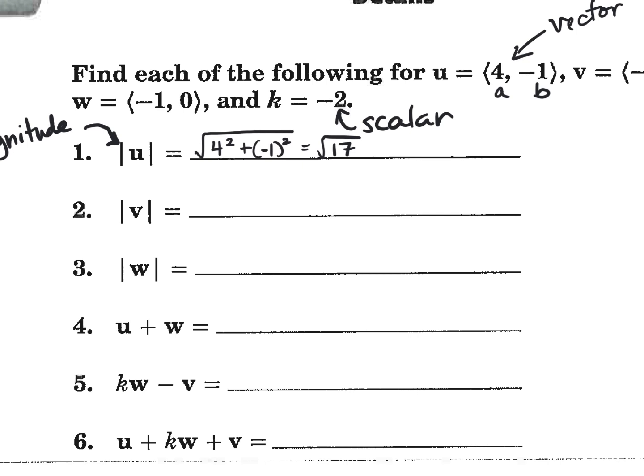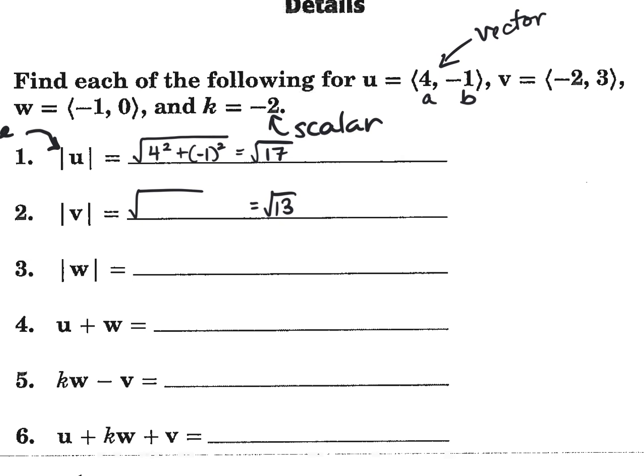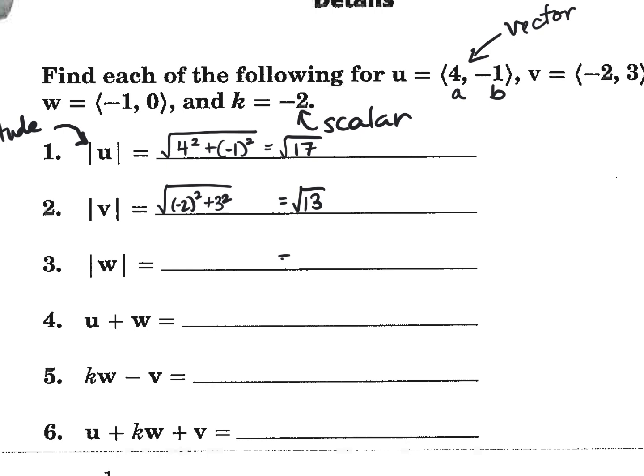Okay, so what did you get for the magnitude of V? Yep, square root of 13. In other words, we're going to take the square root of negative 2 squared plus 3 squared. That would be 4 plus 9 is square root of 13. All right, what did you get for the square root of, or for the magnitude of W? Yeah, 1. This one's easy. Negative 1 squared plus 0 squared is just 1 squared, or 1 squared over square root of 1, excuse me, is just 1. So that's the answer.